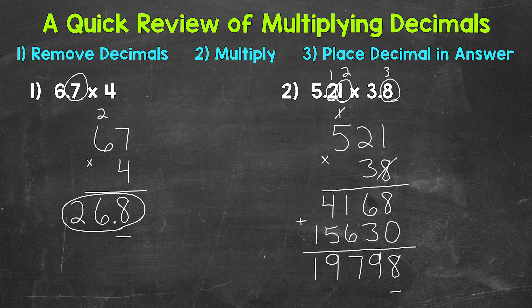So we have 1, 2, 3 digits. Our decimal is going to go between the 9 and the 7. Our final answer, 19.798.